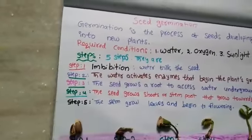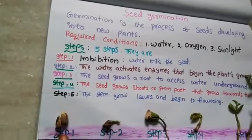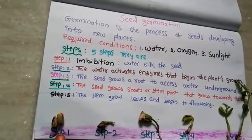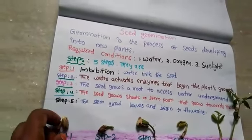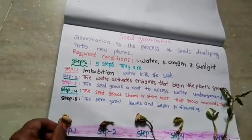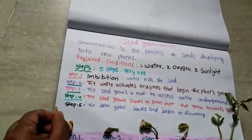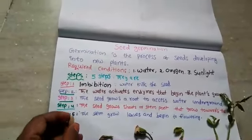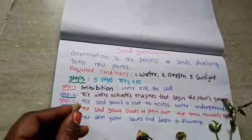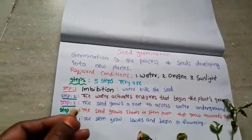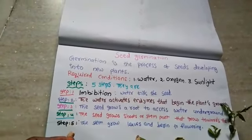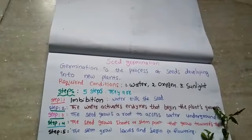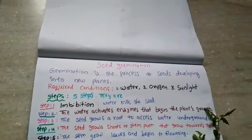This one is step one — imbibition. In imbibition, water fills the seed. This is the seed. After imbibition, the seed swells like this. Water fills the seed. This is imbibition.